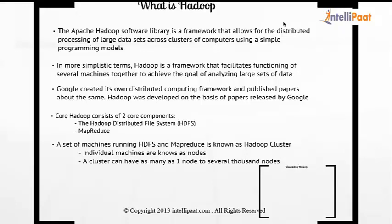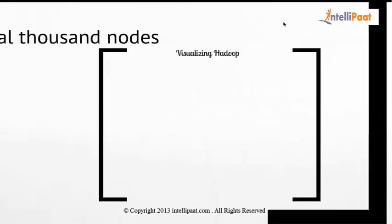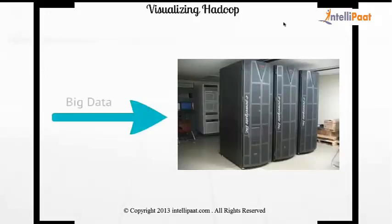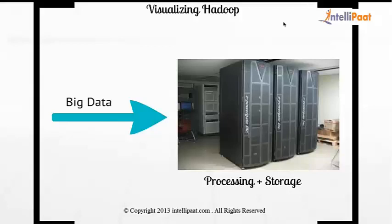The biggest cluster right now is with Cloudera, with a 4,400 to 4,500 node cluster. To visualize what exactly Hadoop is: these are multiple machines that take your big data and provide you processing plus storage. Multiple machines working together to provide processing and storage services for data that is really huge — that's Hadoop.